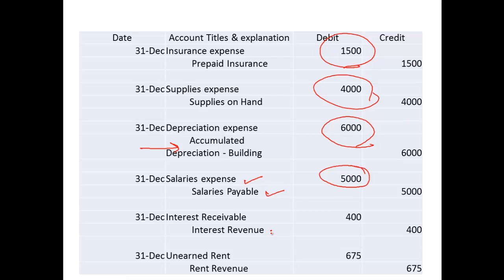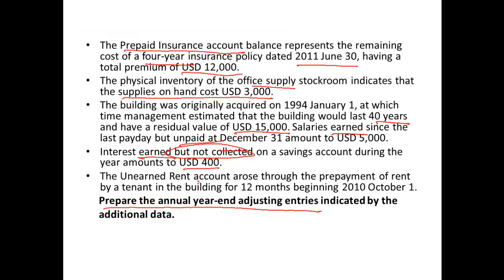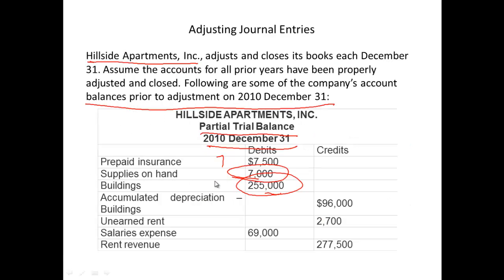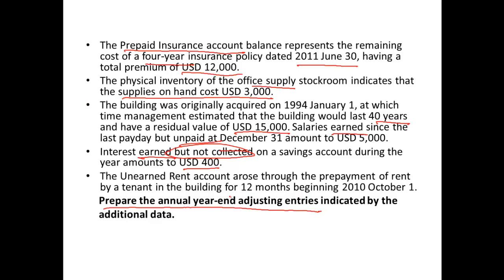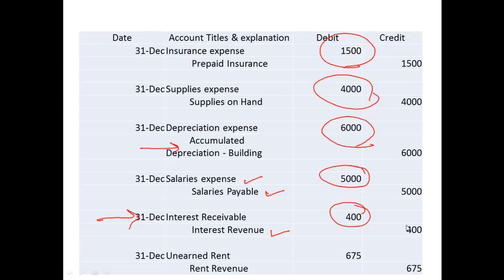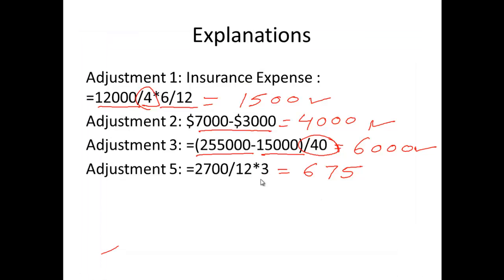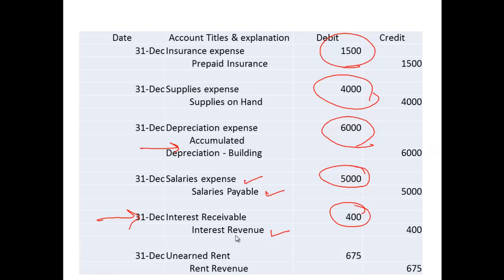The unearned rent account balance in the trial balance is $2,700. This belongs to a twelve-month period beginning October 2010, and the relevant period for us runs to December 31, 2010 — three months. We proportionate $2,700 over twelve months for three months, which gives $675. We book rent revenue of $675 by debiting the unearned rent account and crediting rent revenue.